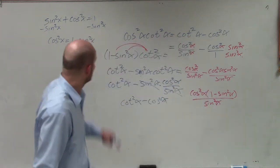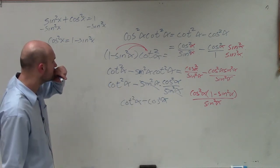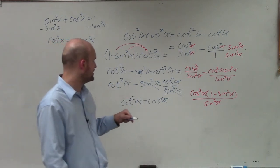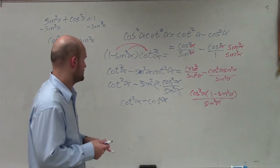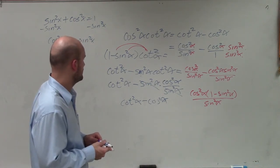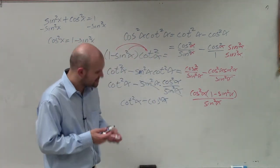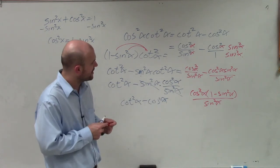OK. Yeah, and then I can convert 1 minus sine squared to cosine. And then that would go to cotangent, and that would leave that as the sine. OK. So it would work really either way.